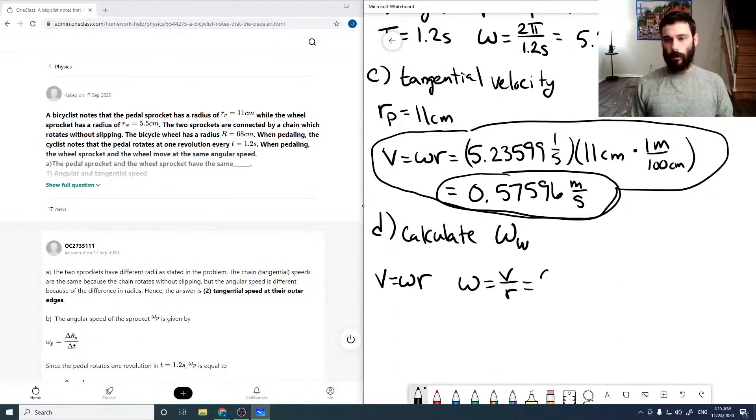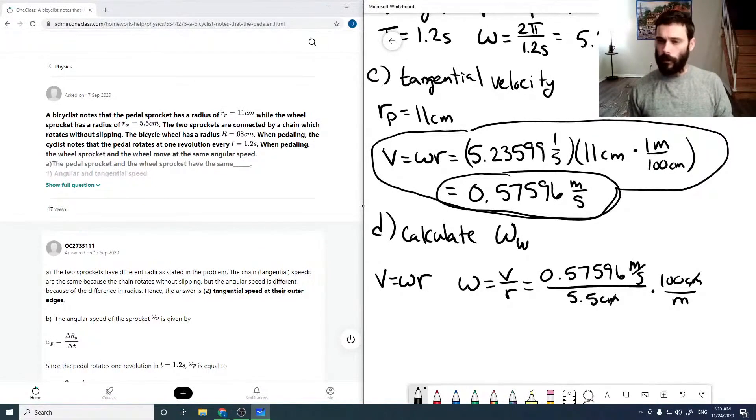And so it's just 0.57596 meters per second over our radius. So, our radius for our wheel sprocket is 5.5 centimeters, with conversion for meters, centimeters to meters, so the centimeters will cancel. And the meters will cancel, there you go.